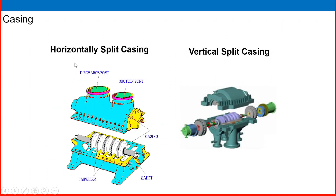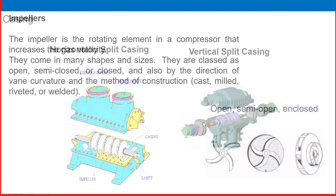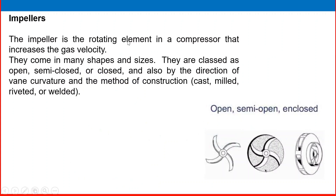The casing acts as a cover or housing for the compressor's internal parts and protects them. There are two types: horizontally split casing and vertically split casing. The impeller is the rotating element of the compressor that increases the gas velocity. There are three types of impellers: open type, semi-open type, and enclosed or closed type.